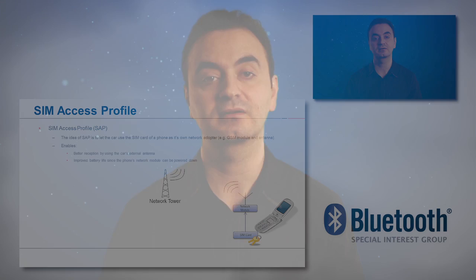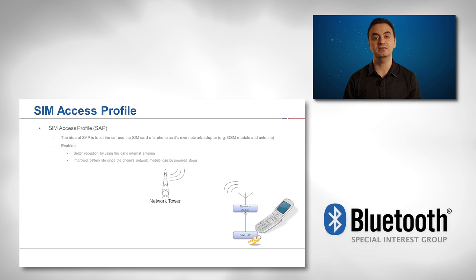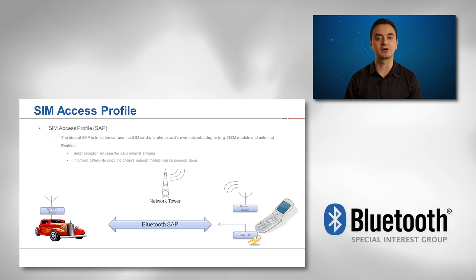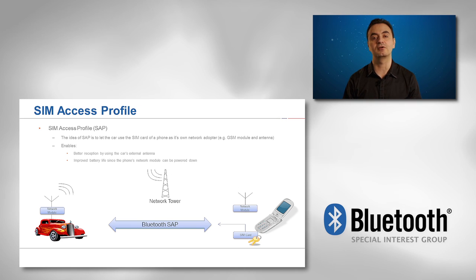SIM Access Profile, known as SAP, enables devices such as a car that has a built-in GSM antenna or network module to connect to a SIM card in a mobile phone over Bluetooth. In this case, the car itself doesn't require a separate SIM card, enabling the car to make phone calls and access the Internet.